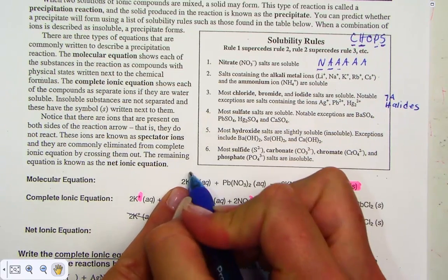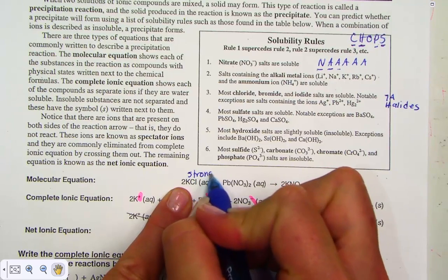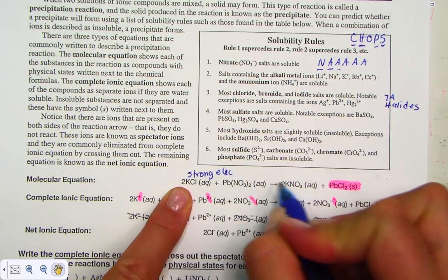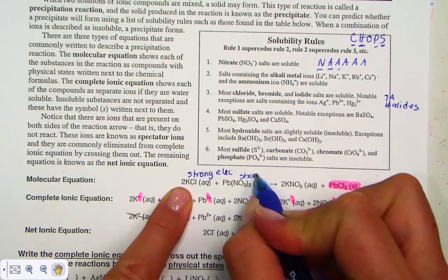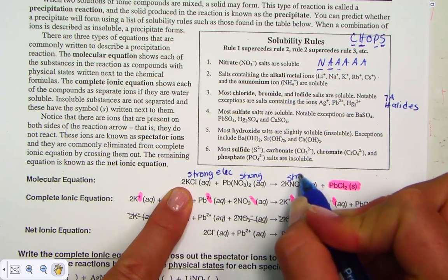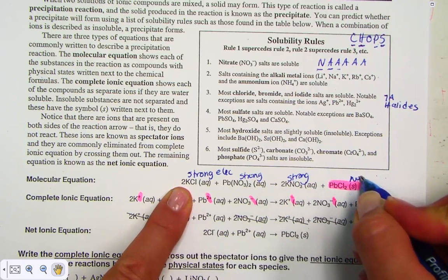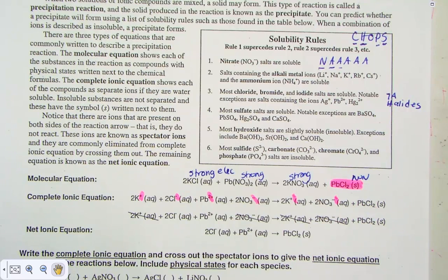Any ionic compound that is water soluble is a strong electrolyte. Break apart the strong, leave together the weak or non-electrolytes, such as this precipitate.